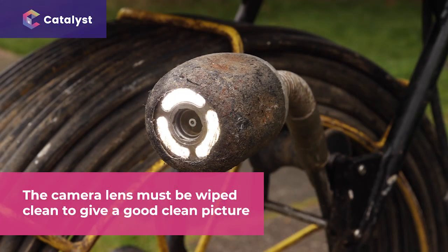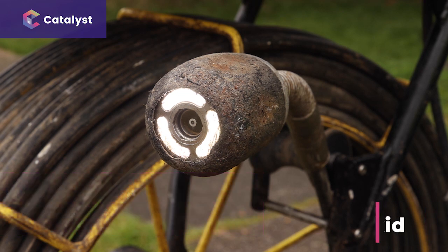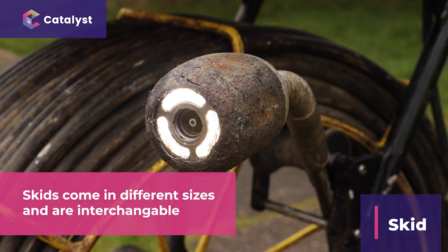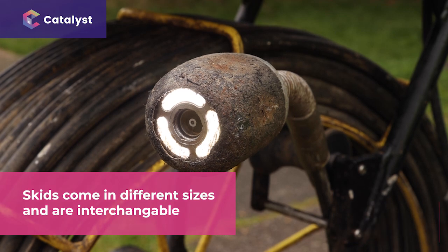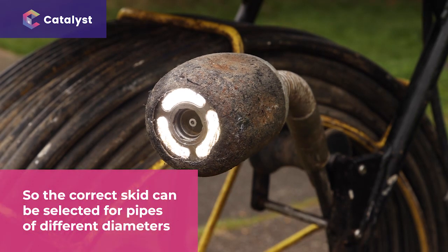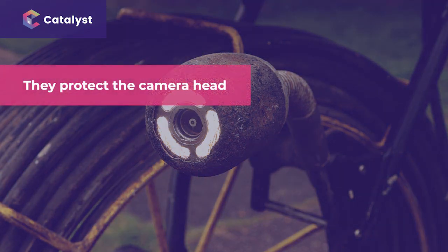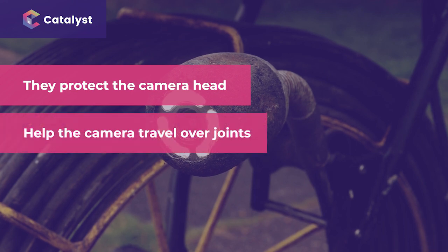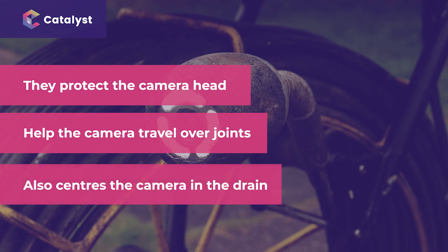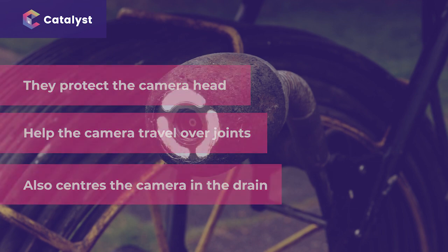The camera lens needs to be wiped clean to give a good clear picture. Surrounding the camera head is a plastic shield called a skid. Skids come in different sizes and are interchangeable, so the correct skid can be selected for pipes of different diameters. Skids have three main functions: they protect the camera head, they help the camera travel over joints using the chamfer at the front and back, and they centre the camera in the drain. We'll go into more detail about the importance of centring the camera a little later.